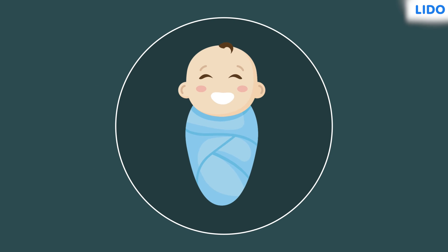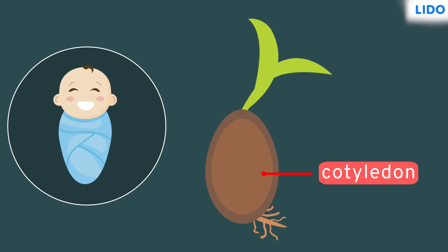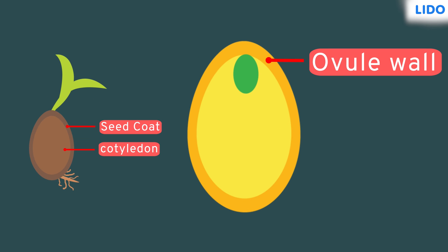Like we cover our babies with warm, thick clothing, the baby plant inside the seed is protected by the hard and strong seed coat. This seed coat is formed from the walls of the ovule.